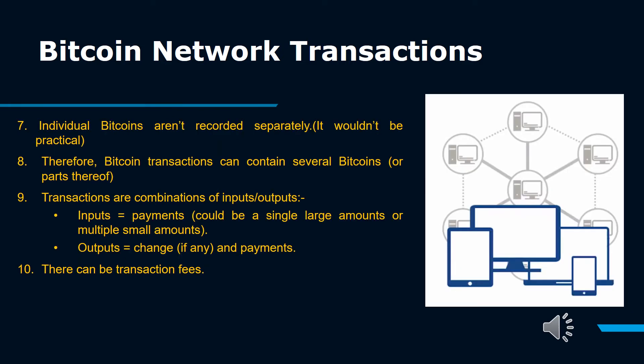Individual Bitcoins aren't recorded separately — it wouldn't be practical. Therefore, Bitcoin transactions can contain several Bitcoins, or parts thereof. Transactions are combinations of inputs and outputs. Inputs are payments, which could be a single large amount or multiple small amounts. Outputs are change, if any, and payments. UTXOs are unspent transaction outputs.